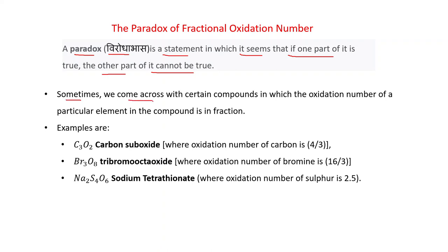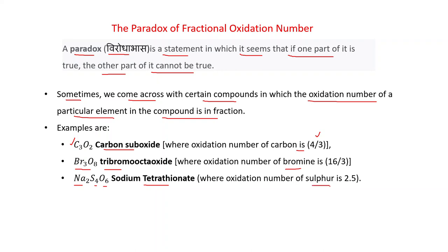Sometimes we come across certain compounds in which the oxidation number of a particular element is a fraction. For example, C₃O₂ (carbon suboxide) — the oxidation number of carbon is 4/3. Br₃O₈ (tri-bromooctoxide) — the oxidation number of bromine is 16/3. Na₂S₄O₆ (sodium tetrathionate) — the oxidation number of sulfur is 2.5.